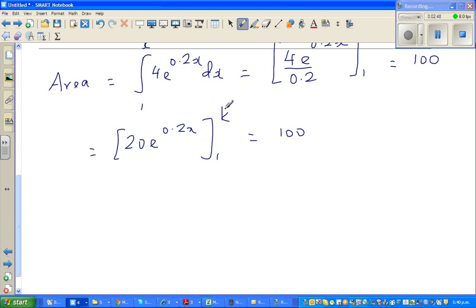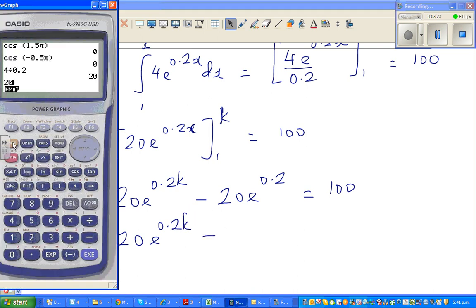So now you have to put k, and then take away 1 by putting into this place. So this implies, this is 20e to the power 0.2k minus 20e to the power 0.2. So what is 20e to the power 0.2k minus, what is 20e to the power 0.2.